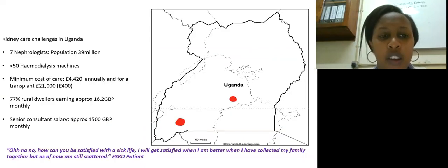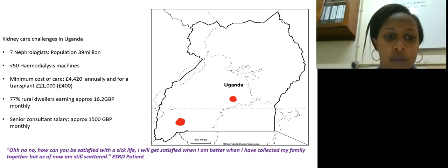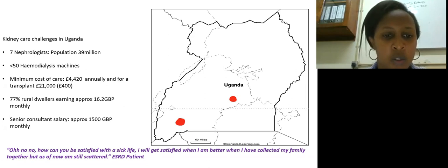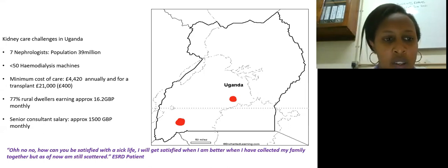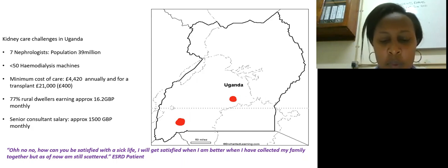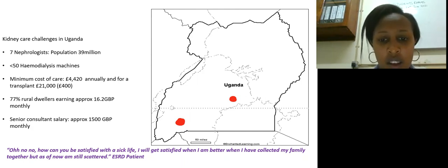In Uganda we don't have that many nephrologists to serve the population that we have. We don't have that many hemodialysis machines, and costs of care are quite expensive considering that almost 70% of our population don't make that much. Even for me as a consultant, if I were to get renal replacement therapy it would be a big cost to me, my family, and the people around me. So it's usually a big decision when you put someone on hemodialysis in a setting such as ours.